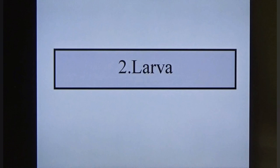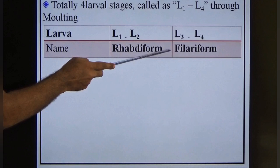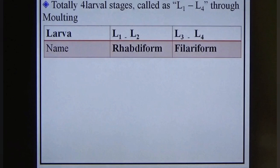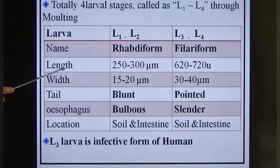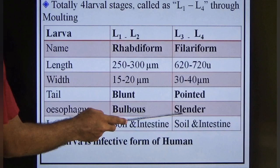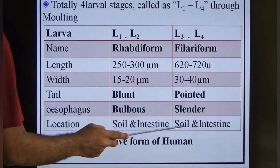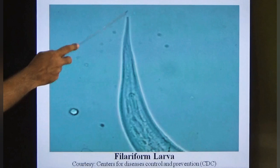There are four larval stages L1 to L4, developing through molding. L1 and L2 are called rhabditiform larvae; L3 and L4 are filariform larvae. Rhabditiform larvae are shorter, have a blunt tail and bulbous esophagus, and are present in soil and intestine. Filariform larvae have a pointed tail and slender esophagus. The most important is L3, which is the infective form for humans.